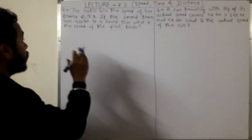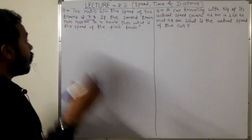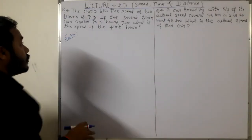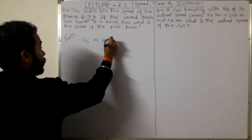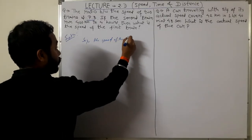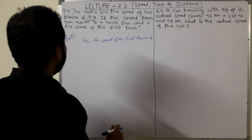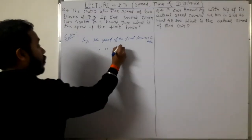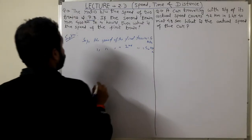If the second train runs 400 kilometers in 4 hours, then what is the speed of the first train? As always, let me picturize the problem. Let the speed of the first train be S1 kilometers per hour, because the units are given in kilometers per hour, and the speed of the second train be S2 kilometers per hour.